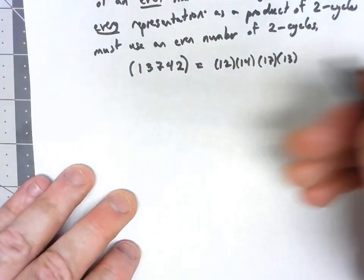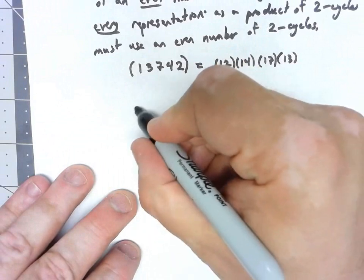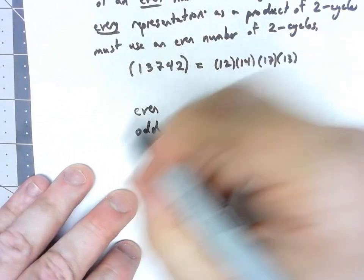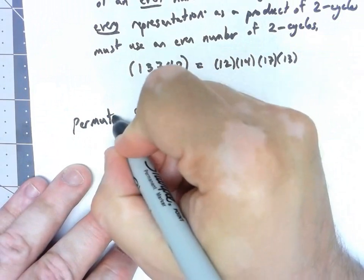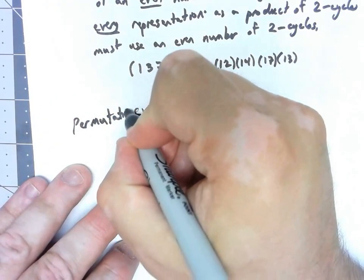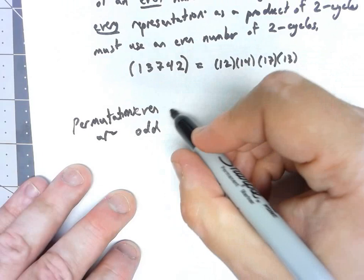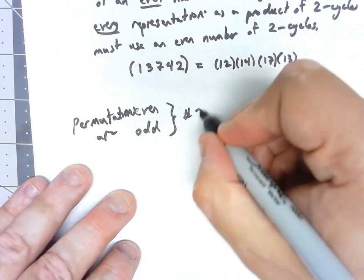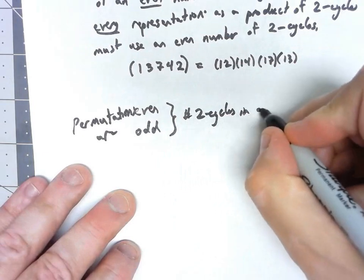What this allows us to do is classify our permutations as even or odd based on the number of two cycles in a representation.